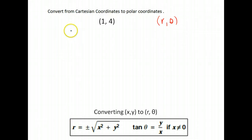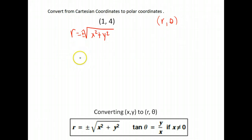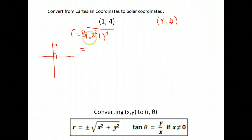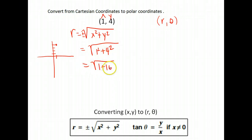Let's start by finding r. r equals the square root of x² + y². Notice it has plus or minus — that's because you can have the same point depending on what angle you have, going positive or negative direction. One thing you'll want to do is plot the point (1, 4) so you know what quadrant you need to end up in. So finding r: it's the square root of 1² + 4², which gives me 1 + 16, or the square root of 17.